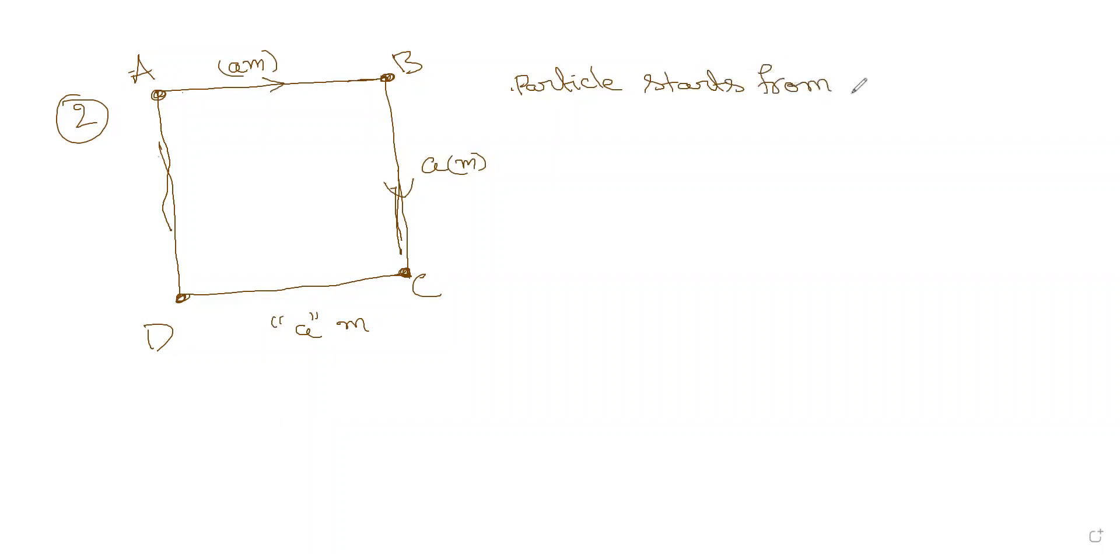A particle travels along the square ABCD of side length a meters. It travels along the square and reaches the point C. A particle starts from A and reaches the point C in 10 seconds. Find the same things: distance, displacement, speed, and velocity.